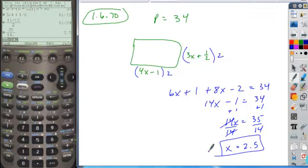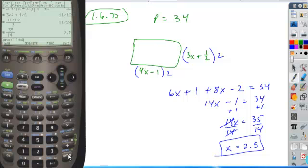And now it's just a matter of plugging that in to each of the expressions for the side. So if I plug in 2.5 here, times 4 equals 10, minus 1 gives me 9. So these sides are 9.